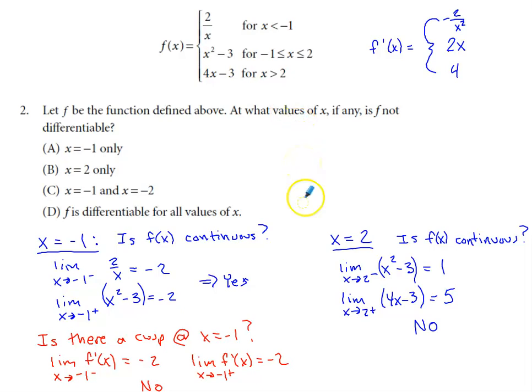So what I did initially for both the x value of negative one and the x value of two is I tried to answer the question about continuity. Now, I do see that the function is defined on this middle inequality at both of those x's. So my function is defined at both negative one and positive two, but is my limit going to exist at either or both of those values?